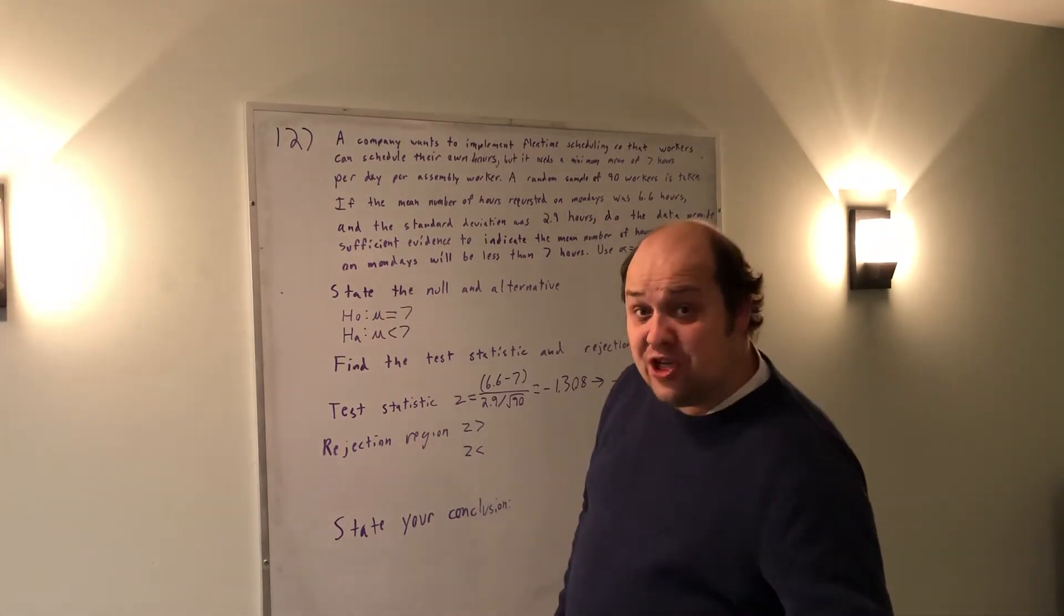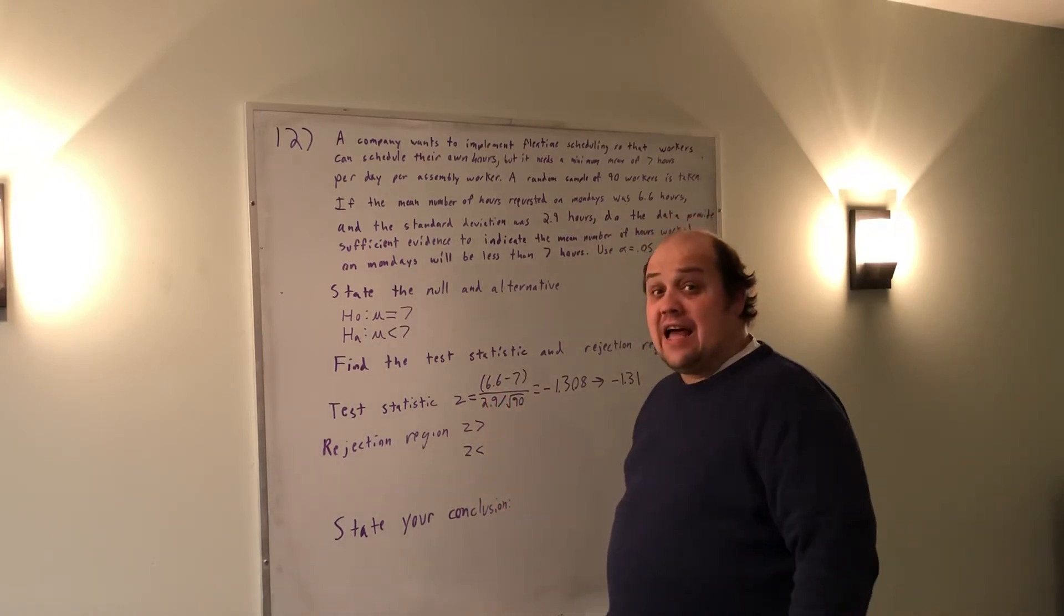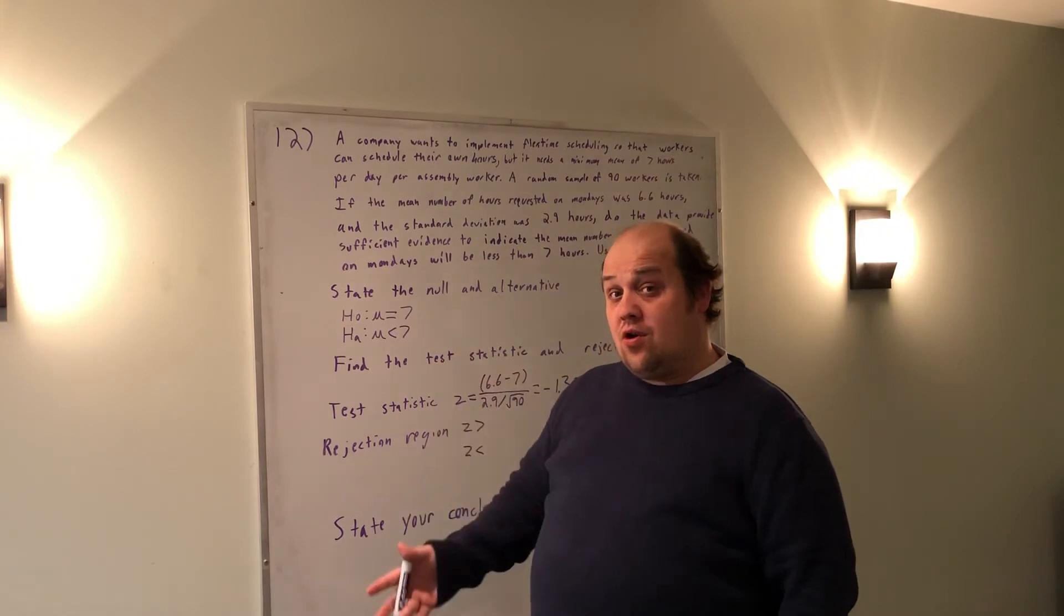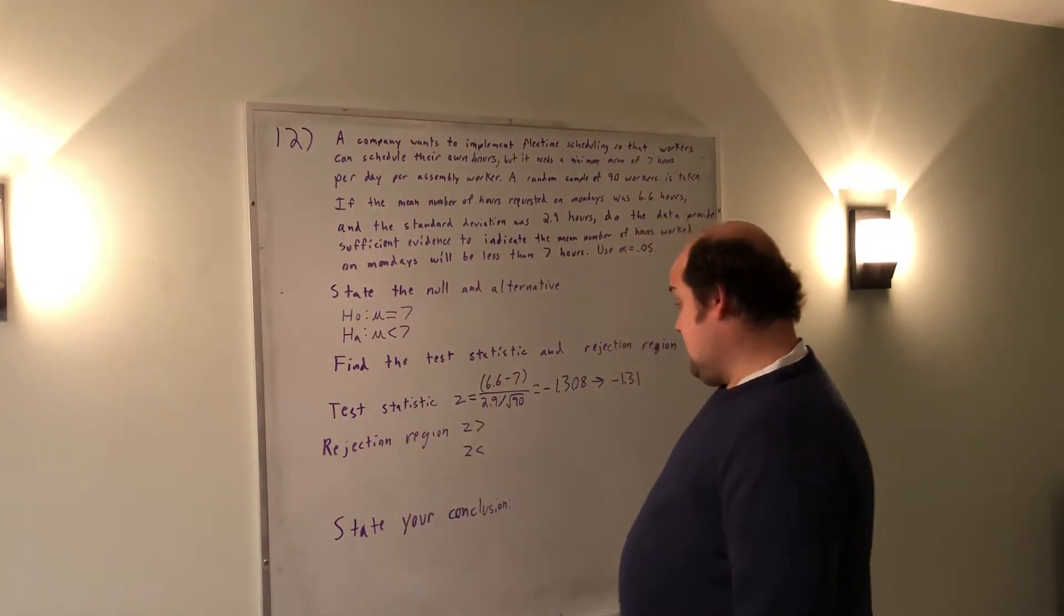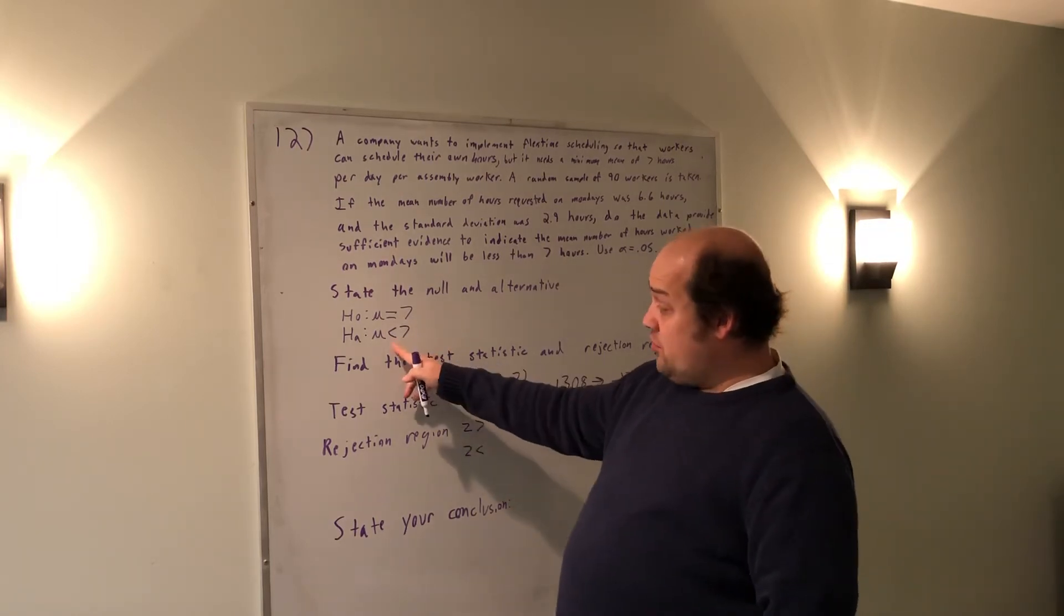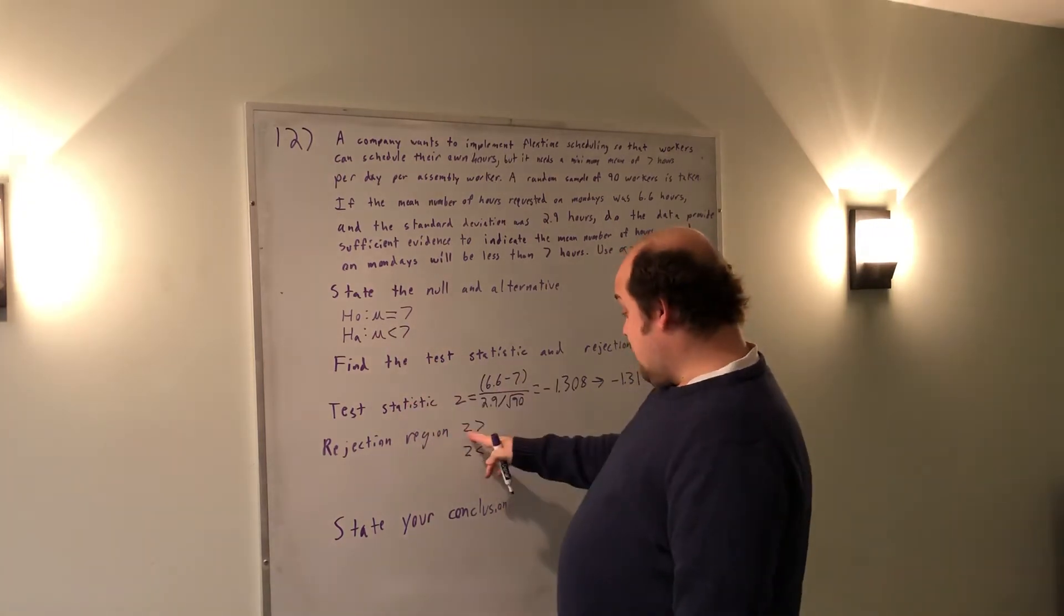I now need a rejection region. Again, all of these are laid out on slide 10 of the PowerPoint from the last day of class on proportion testing. Here this negative 1.31 is what I need to compare to something.